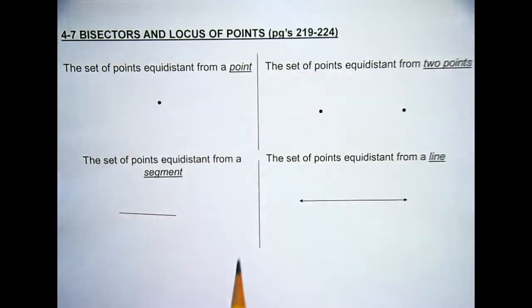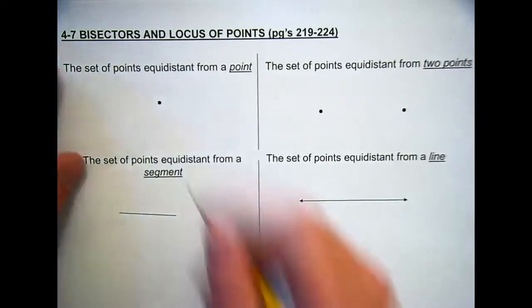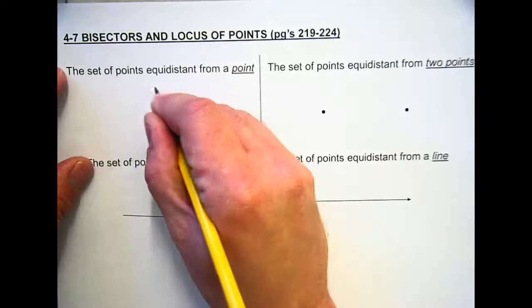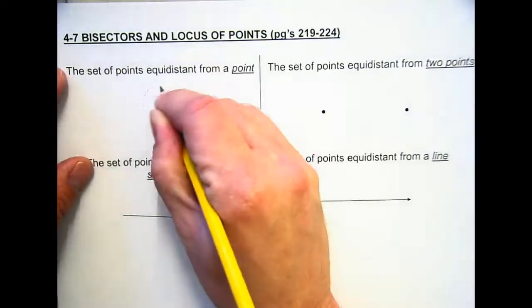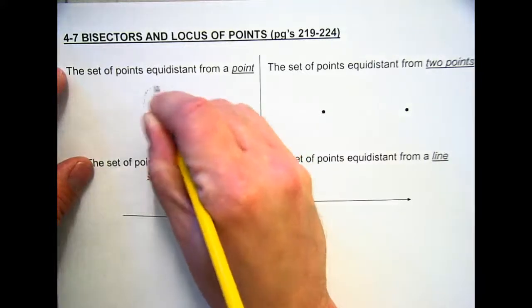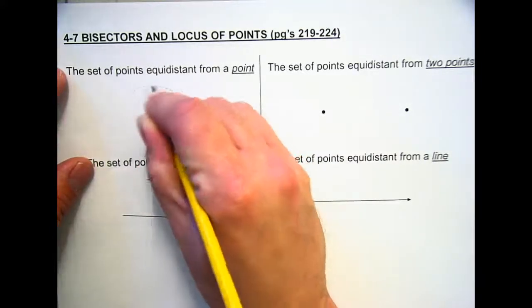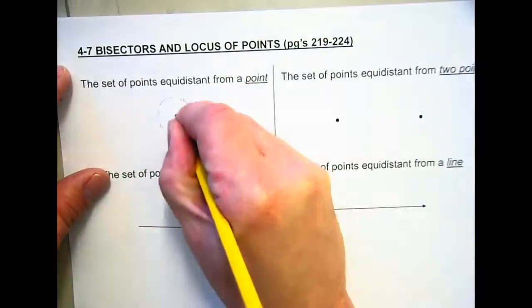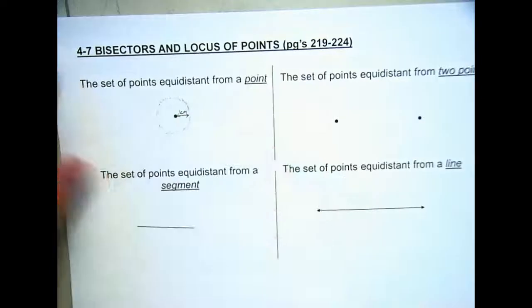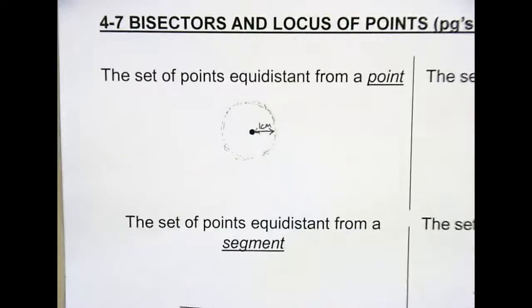What's this going to look like? It's just a circle. If we said a centimeter away, we'd have a circle. The center point would be our center point, and we have a circle. Since I'm not actually measuring, I'm going to label it one centimeter. That satisfies that condition — a set of points equidistant from a given point is just a circle.